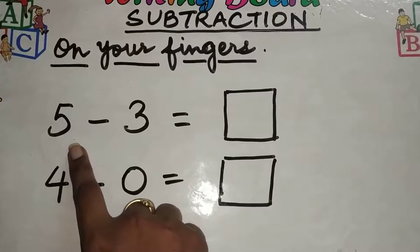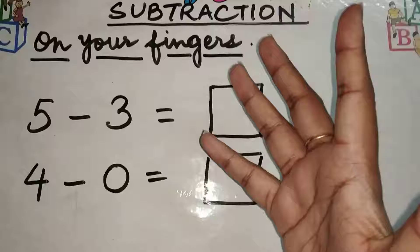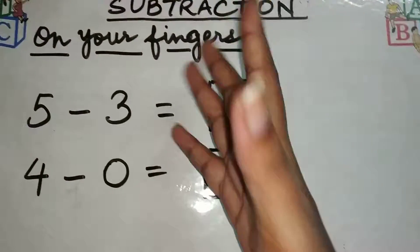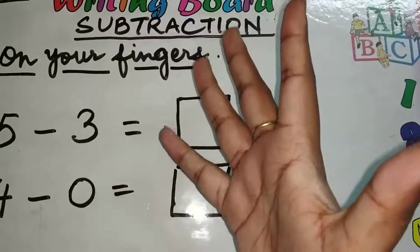So, what is written here? Five. So, take out five fingers. One, two, three, four and five. So, five fingers.